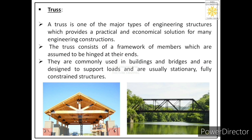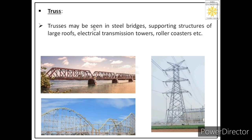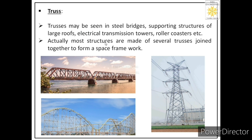Trusses are stationary. They are always in equilibrium and they are fully constrained structures. The meaning of fully constrained structures is that the motion between the members is zero — there is no motion among the members, so members are also stationary. Trusses may be seen in steel bridges, supporting structures of large roofs, electrical transmission towers, and roller coasters. Most structures are made of several trusses joined together to form a space framework.